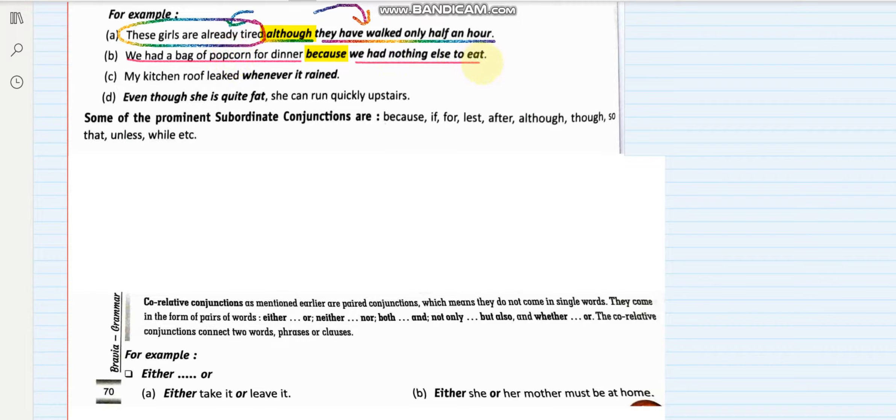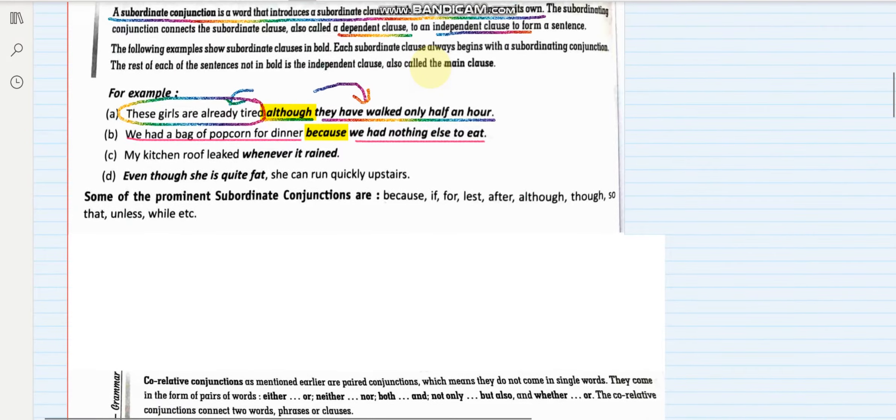Now look at this: 'We had nothing else to eat.' If I remove the first part, this will not make any sense. I hope you have understood the subordinate conjunction.